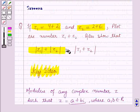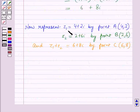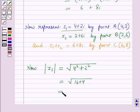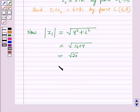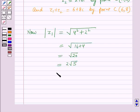Now using the key result, for Z1 equal to 4 plus 2 iota, modulus of Z1 will be equal to square root of 4 squared plus 2 squared, which is equal to square root of 16 plus 4, which is equal to root 20, that is 2 root 5. This is the distance from the origin to the point Z1, which equals OA.